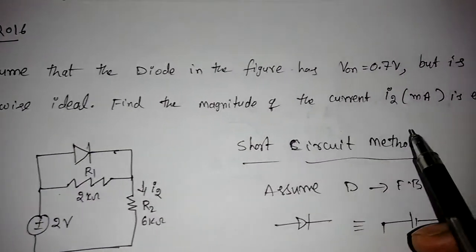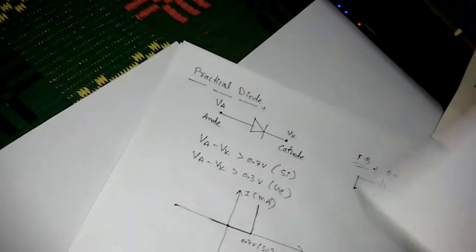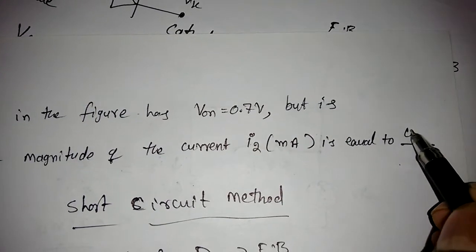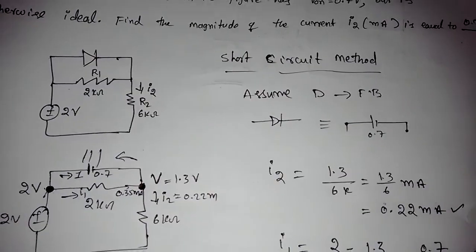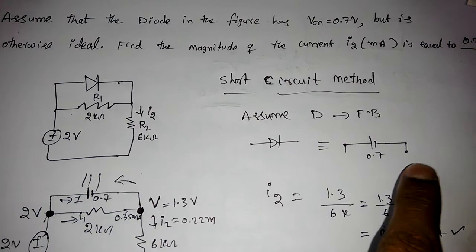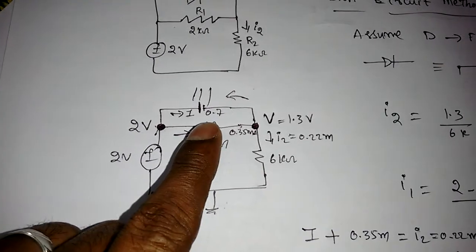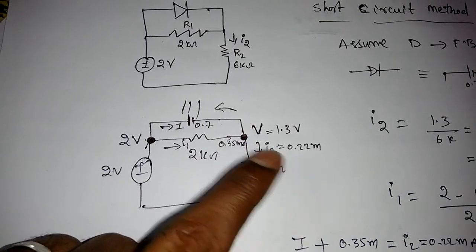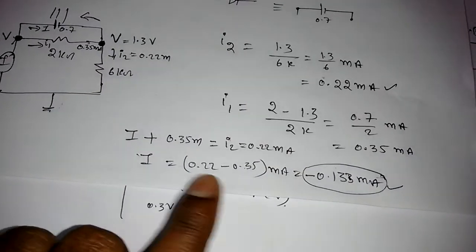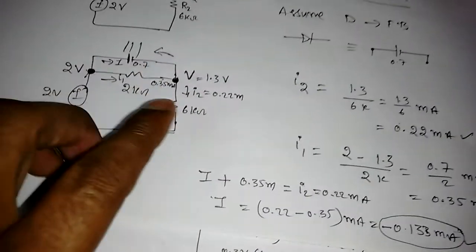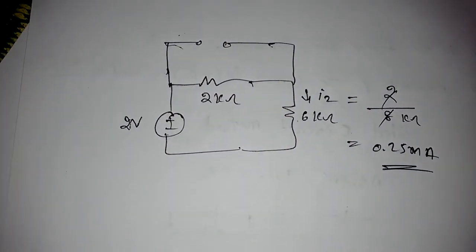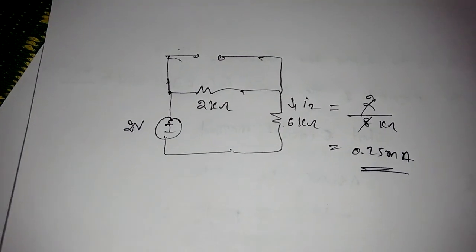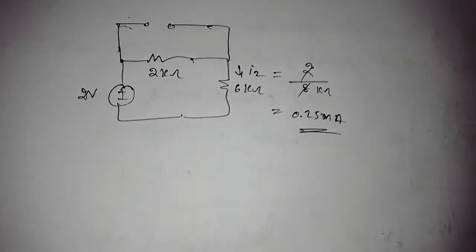The magnitude of I2 is 0.25 mA, as required by the question. To summarize: we assumed forward bias with the diode equivalent to 0.7V, but the analysis gave I as minus 0.133 mA, meaning the current flows in the opposite direction — the diode is reverse biased. This leads directly to the open circuit result. The open circuit method will be covered in the next lecture.